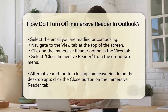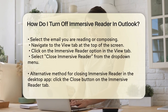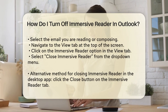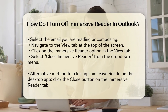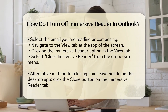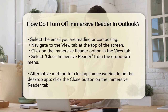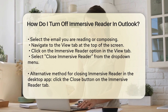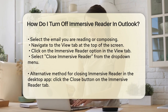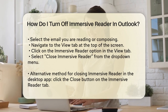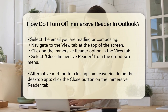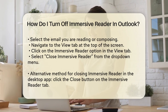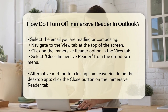For Outlook Desktop: if you're using the Outlook Desktop app, here's what you need to do. Open your Outlook Desktop application and select the email you're currently reading or composing. Go to the View tab located at the top of the screen. In the View tab, you'll see the Immersive Reader option — click on it. From the drop-down menu, select Close Immersive Reader. This will immediately turn off the Immersive Reader feature.